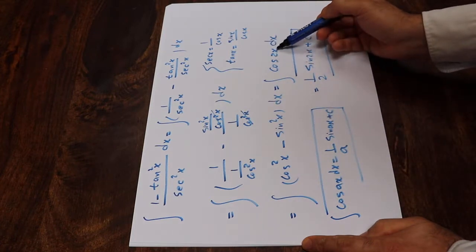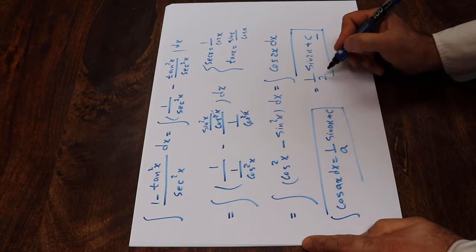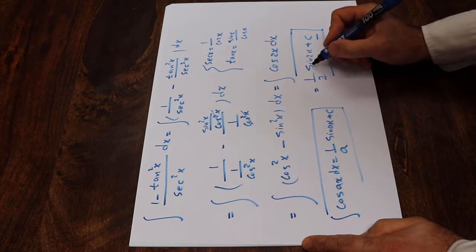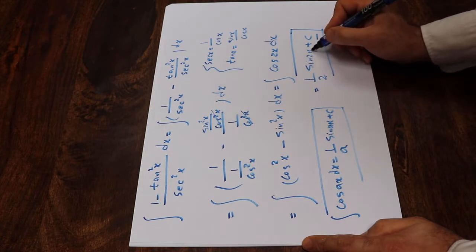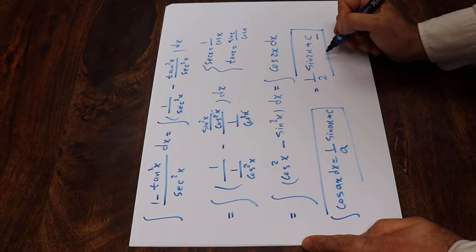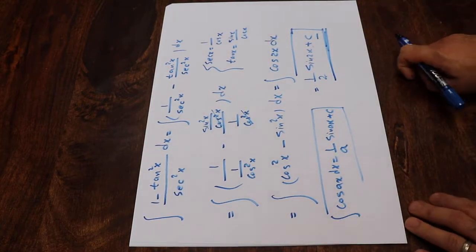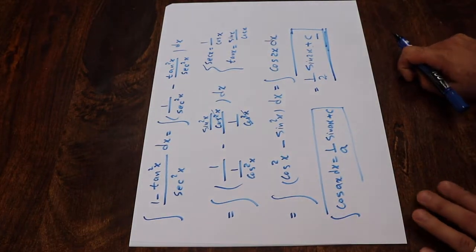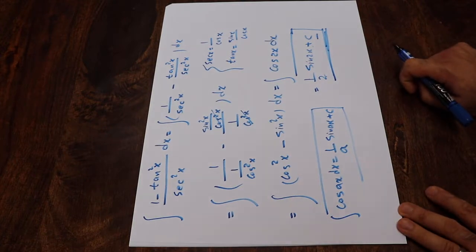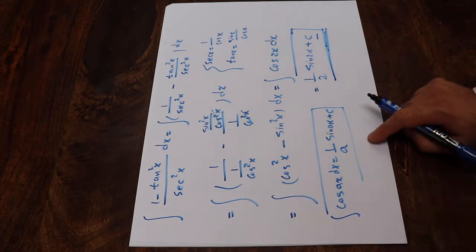Therefore the integral of cosine 2x will be 1 divided by a, that is 1 divided by 2, times sine 2x — which is sine ax in this case. So I hope you found this video helpful. If you are interested, please feel free to subscribe to this channel so that you get updated when I upload new videos. Thank you.